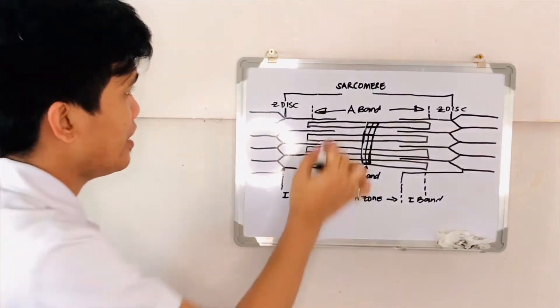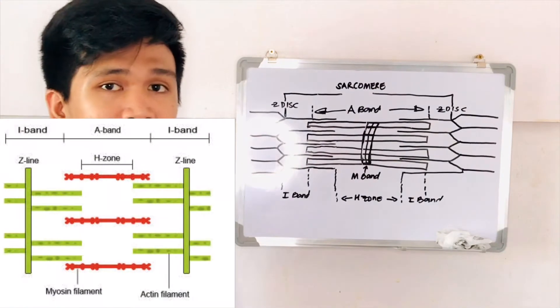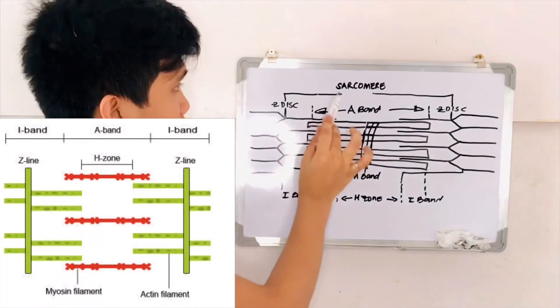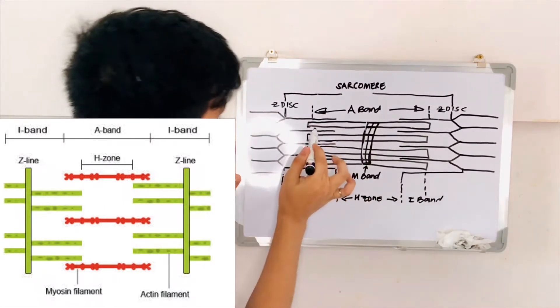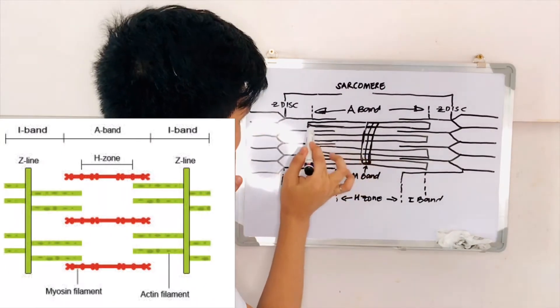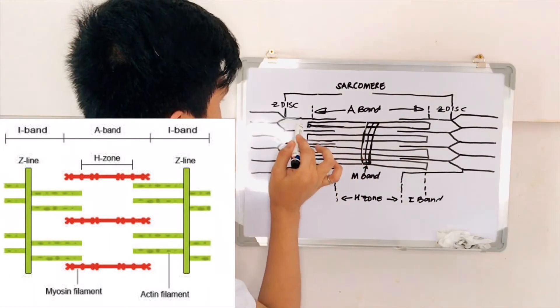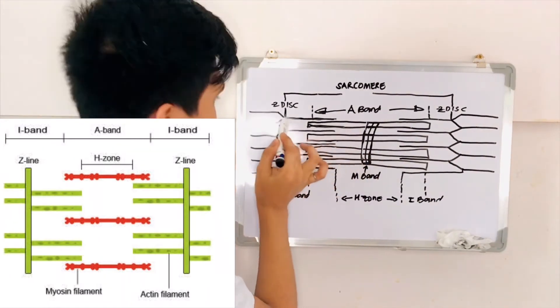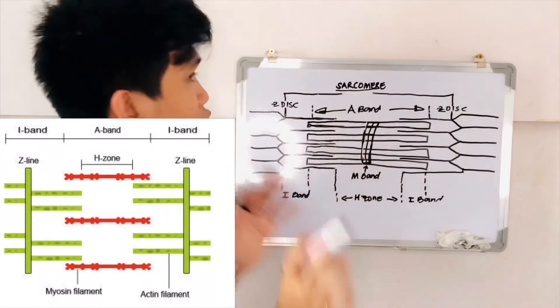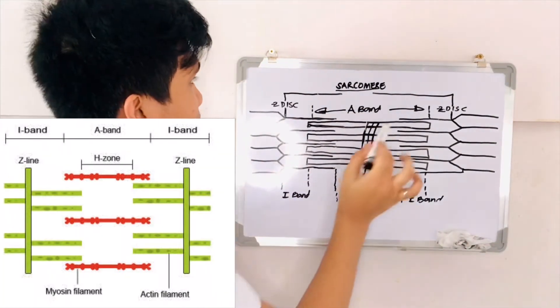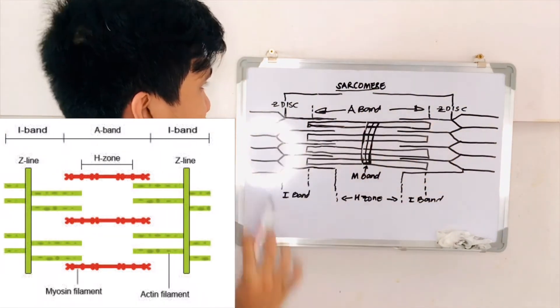So this one here is a sarcomere. Sarcomere is also known as the unit of the muscle cell. But before we discuss further, this one here is the myosin. As you can see, this one is thick, right? While this one here is the actin. So again, when we say sarcomere, it is the unit of muscle cell and it is in between two Z-discs.